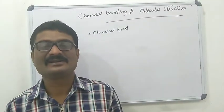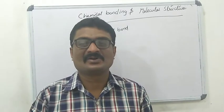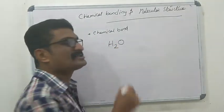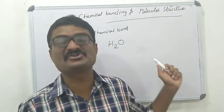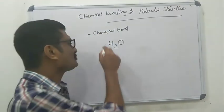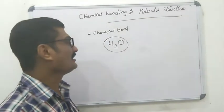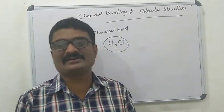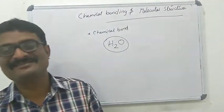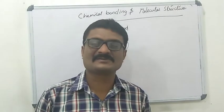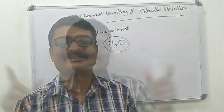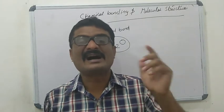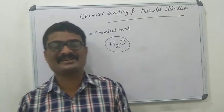For example, some force of attraction holds the two hydrogen atoms and one oxygen atom in the water molecule H2O. The formula H2O indicates when two hydrogen atoms and oxygen atoms are held together by some force of attraction. This force of attraction is termed as chemical bond. The force of attraction which holds atoms together in a molecule is called chemical bond.